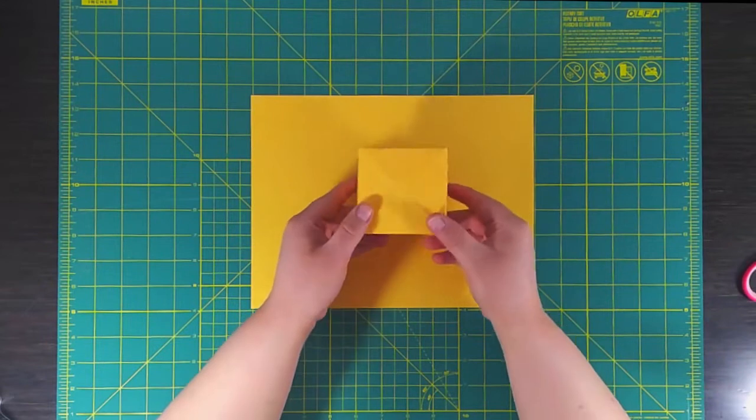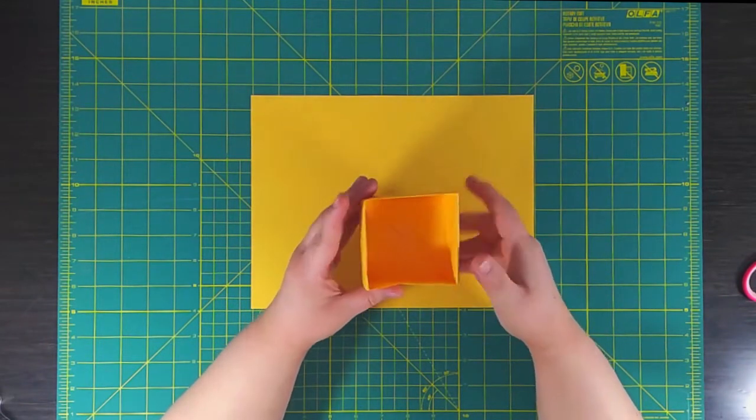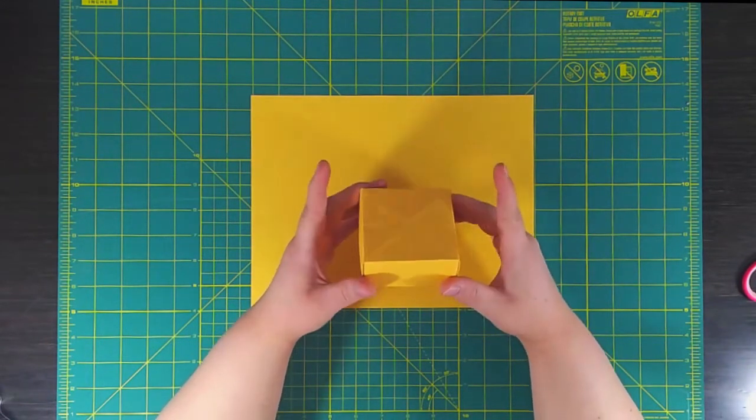Hi everybody, my name is Michelle. I'm a graphic designer with Girl Scout Spirit in Nebraska and today we're going to be doing a simple origami box activity that's really great for beginners. So let's get started.